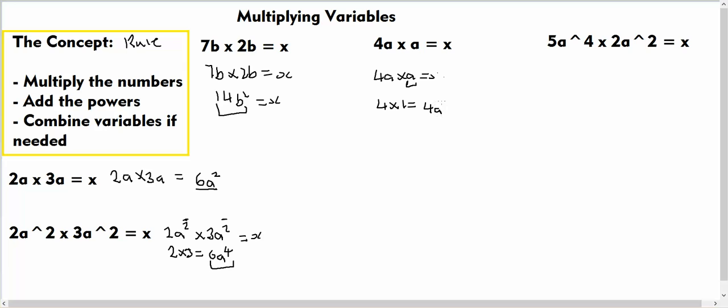So over here we have 5a⁴ multiplied by 2a² and this is equal to x, which is the number we are trying to find. So if we multiply the numbers we have 5 multiplied by 2, and we know 5 multiplied by 2 is equal to 10. And if we add the powers we have 4 plus 2 is equal to 6, therefore our answer, our value of x, is equal to 10a⁶.